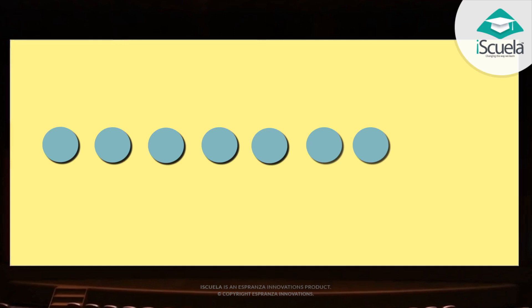Eight dots are more than seven. Nine are more than eight. Let us count them straight. One by one they increase. Let us all say cheese.